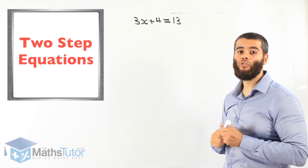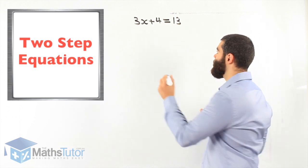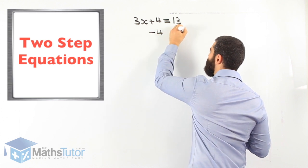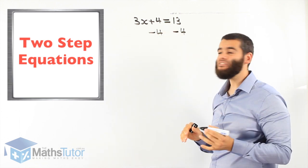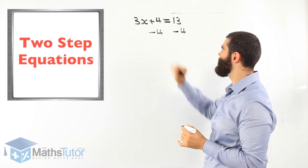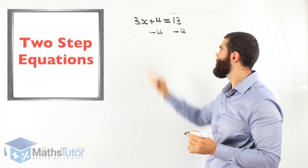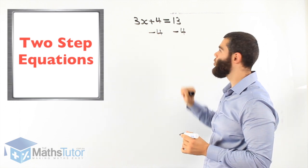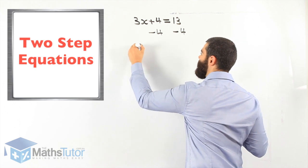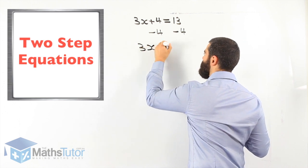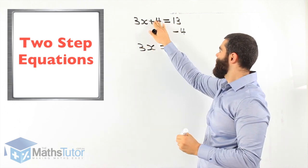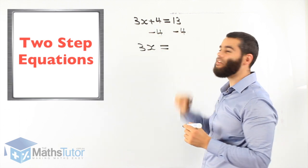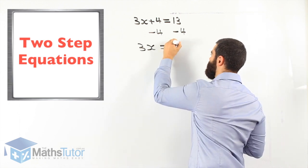So here we have positive 4 — that's the furthest one away. We minus 4, and of course we minus 4 on the other side. We learned in equations: what we do to one side we must do to the other side. We always do the opposite. So plus 4 minus 4 is gone, and we're left with 3x. 13 take away 4 is 9.